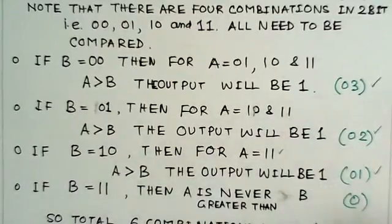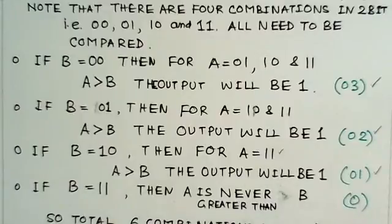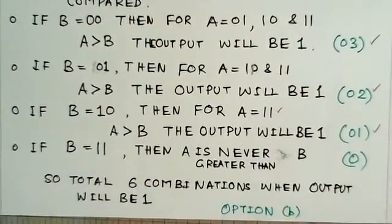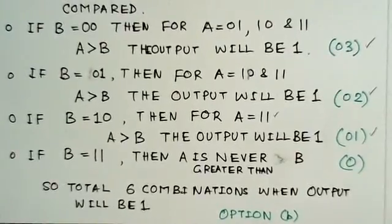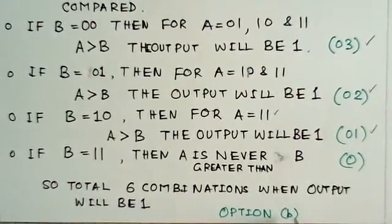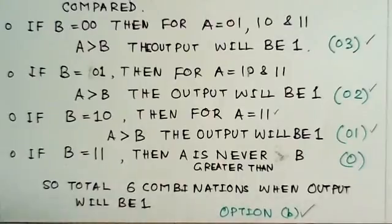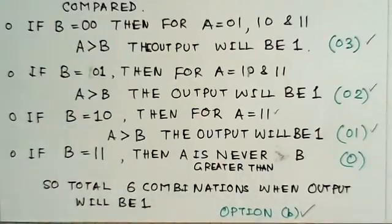So these 3 plus 2 plus 1, there are 6 combinations which will give me A greater than B. So it is a very straightforward and simple problem. So this is option B, is the right choice here.